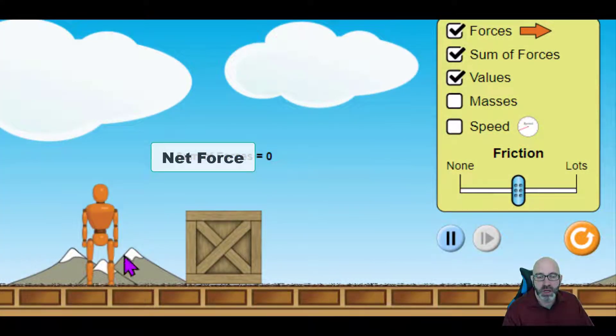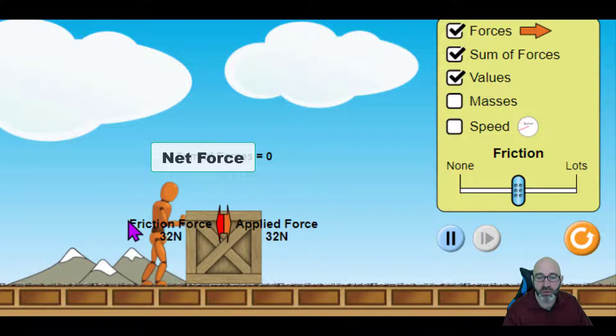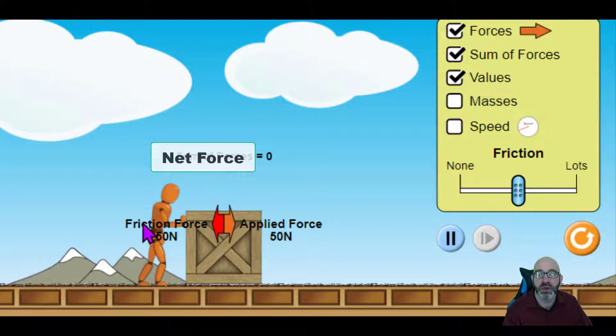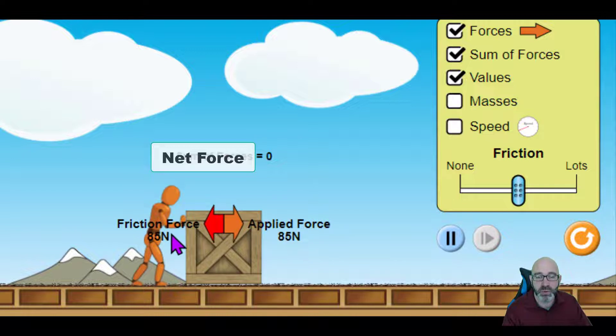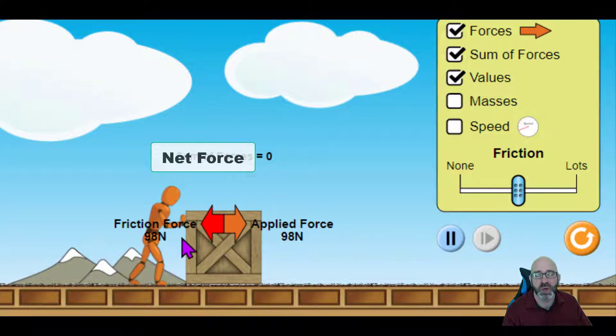So in this simulation, I have this orange figure here trying to push this crate. And currently, we can see that all of the forces, the sum of the forces, or the net force is zero. There's a force due to gravity. There's a normal force holding it up. But if the orange figure starts to apply a force, in this case, 50 newtons, we see that the frictional force pushing back on it to prevent it from moving is also 50 newtons. And so our sum is still zero. If the orange figure continues to push with more and more force, the frictional force increases as well, up until a point.